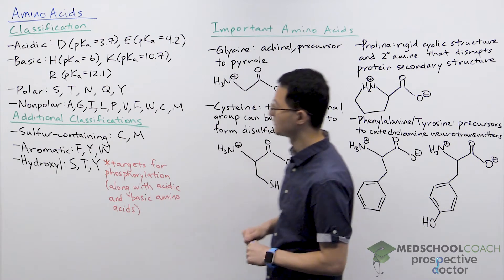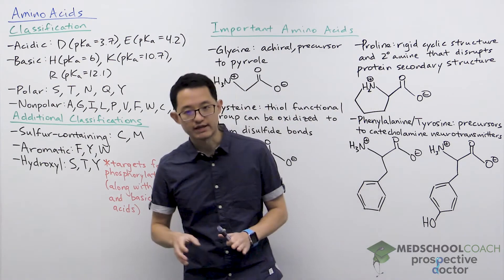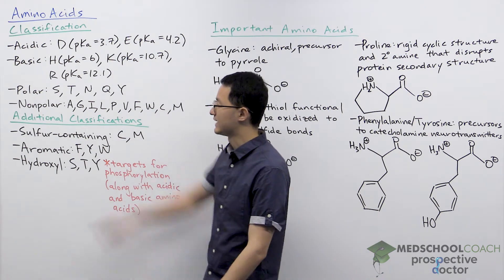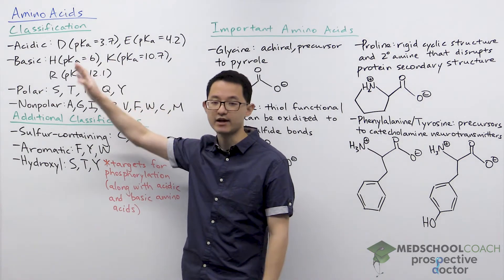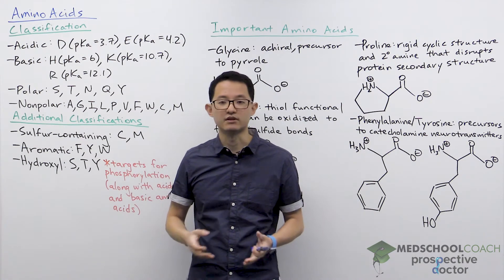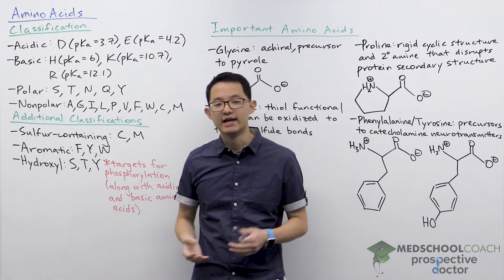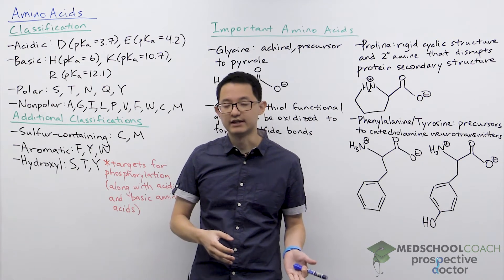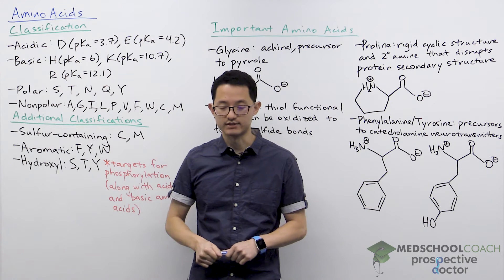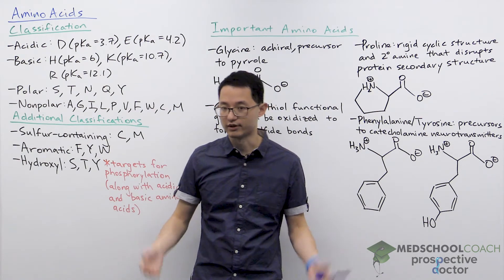To start with classifications, the most important classification is classifying amino acids as acidic, basic, polar, or nonpolar. This is important for answering a lot of MCAT questions. Often you're looking at particular amino acids interacting with other particular amino acids — for instance, nonpolar wants to interact with nonpolar.